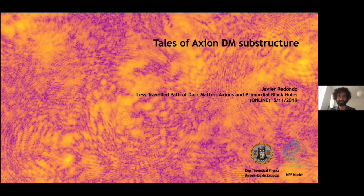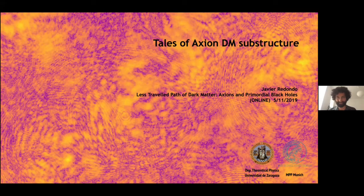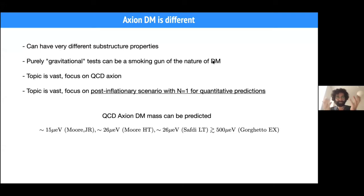What you see in my first slide is a density map of an axion dark matter simulation in the early universe, color coded by density. This is just a two-dimensional slice, and you see that axion dark matter at very small scales looks very different from typical visualizations — it has these wavy patterns. The spirit of this talk is to point out that axion dark matter is different, and I want to focus on the fact that axion dark matter can have very different substructure properties. Therefore, purely gravitational tests of dark matter could provide us with smoking guns to the nature of dark matter — whether dark matter is made of axions or not.